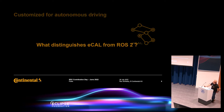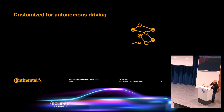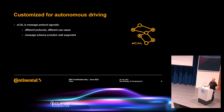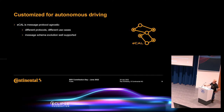I would like to focus on three things. First of all, eCal is message protocol agnostic — there is no eCal message system or eCal IDL. We can use different standard protocols from the market like Google Protobuf, FlatBuffers, JSON, and similar formats. We can always choose the best fitting protocol for our use case.